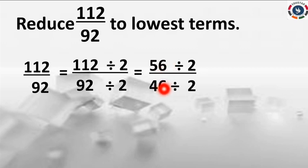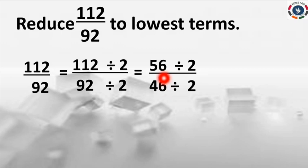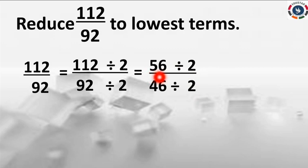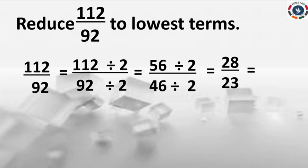You want to keep dividing until you get co-prime numbers. Here 56 and 46 — both are even numbers. So you can divide by 2 again. Write the same 2 in the denominator also. 56 divided by 2 is 28. 46 divided by 2 is 23. So we get 28 by 23.